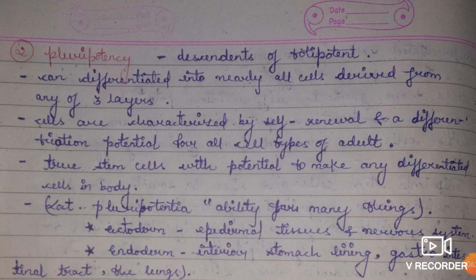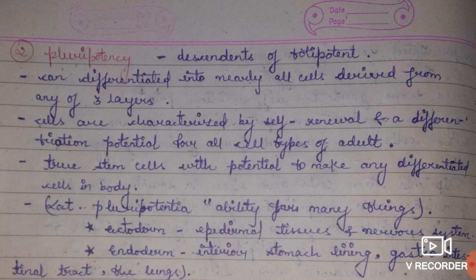Totipotent cells are formed by the fusion of male and female gametes — egg and sperm. These totipotent cells give rise to somatic cells. Once a cell crosses the state of totipotency, it is very difficult to convert back, though researchers have made it possible.